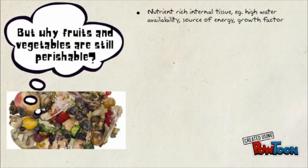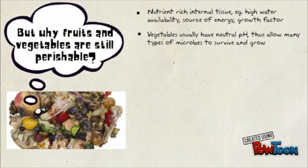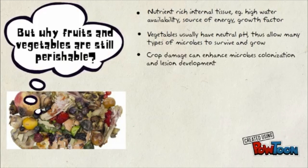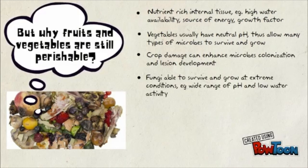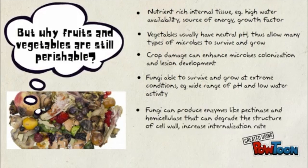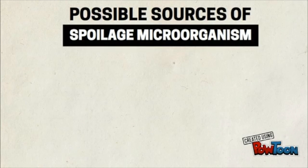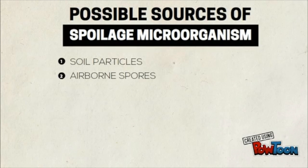Nutrient-rich internal tissue and vegetables usually have neutral pH. Crop damage can enhance microcolonisation and lesion development. Fungi are able to survive and grow at extreme conditions, and fungi can produce enzymes that can degrade the structure of the cell wall.